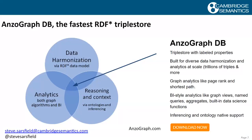We provide AnselGraph DB, one of the fastest RDF triple stores on the market. It supports data harmonization through the RDF data model, both graph algorithms and BI-style analytics, and ontology reasoning and context through RDFS and OWL. If you want to try it, go to AnselGraph.com and download it, or feel free to email me and we can talk about your project.